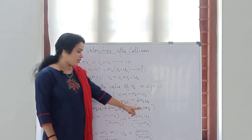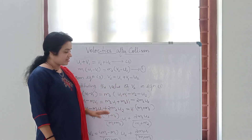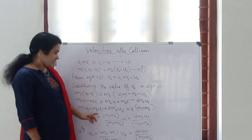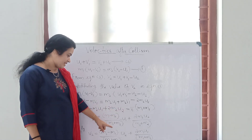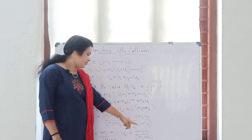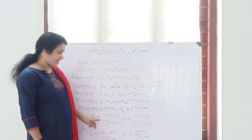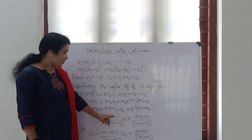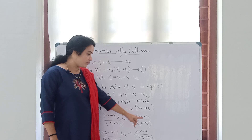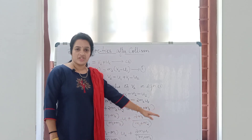Because v1 into (m1 plus m2) equals the left-hand side, we divide both sides by (m1 plus m2) to get v1. So v1 is equal to (m1 minus m2) divided by (m1 plus m2) into u1, plus 2 m2 u2 divided by (m1 plus m2). That is the equation for v1.